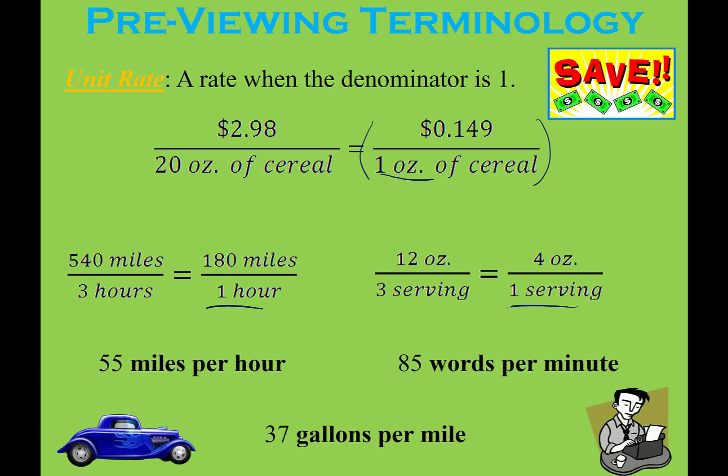Some other rates you would typically see: how fast you can type or how quickly you can read, miles per gallon for how efficient your car is with fuel, and miles per hour for how fast you're going.